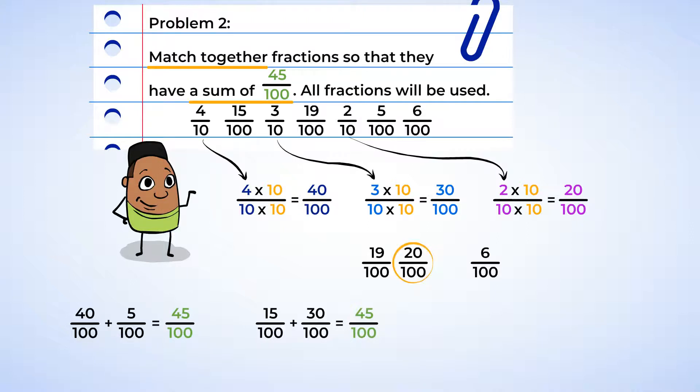Now we have 20 hundredths, 19 hundredths, and 6 hundredths left. Let's see what that sum will give us. 20 hundredths plus 19 hundredths is 39 hundredths. 39 hundredths plus 6 hundredths is bingo! 45 hundredths! Our final match! That one was a little tricky, having 3 fractions to make the sum. Good thing we're math ninjas.